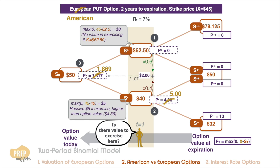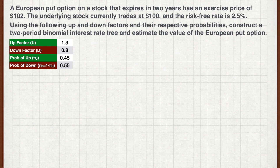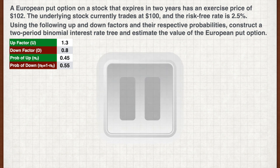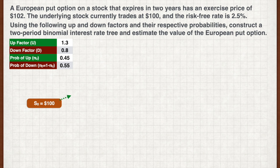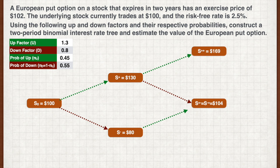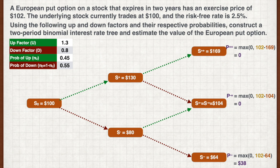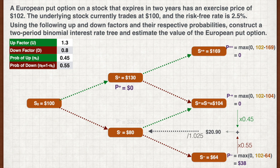Let's pause for an exercise. A European put option on a stock that expires in two years has an exercise price of 102 dollars. The underlying stock currently trades at 100 dollars and the risk-free rate is 2.5%. Using the given up and down factors and their respective probabilities, construct a two-period binomial tree and estimate the value of the European put option. First, construct the two-period binomial tree. At expiration, the values of the put options are as shown — you should be happy to see the number of zeros. P-plus should be zero also. Traversing backwards, P-minus works out to 20.39 dollars. Traversing backwards again, the value of the put option is 10.94 dollars.